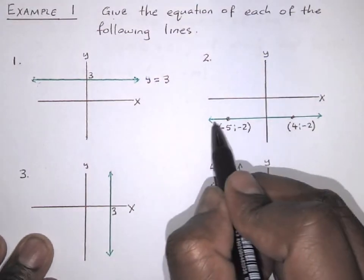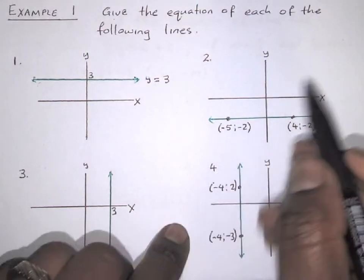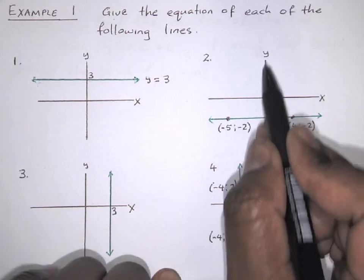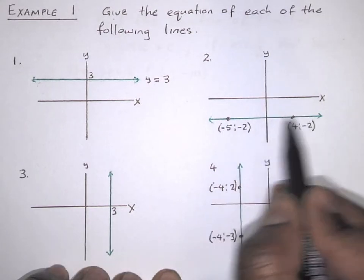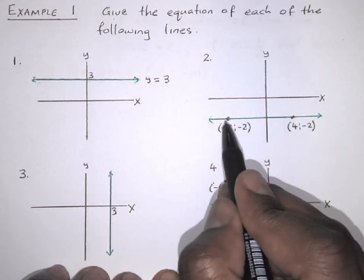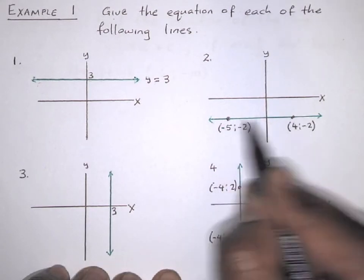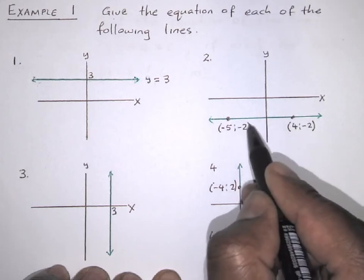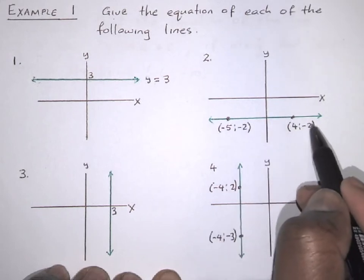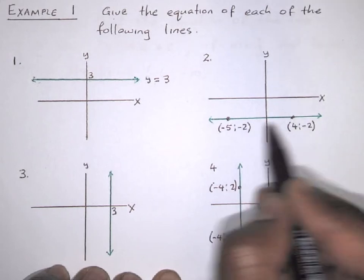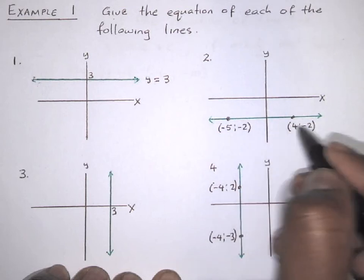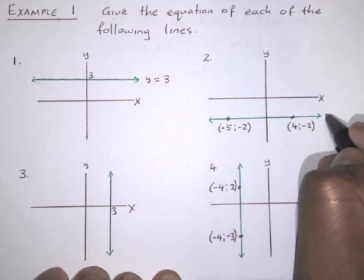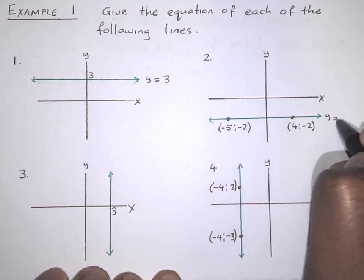Let's look at number 2. This line here only cuts the y-axis. The y-value on this line is minus 2 — you can see the y-value is minus 2. So the equation is y is equal to minus 2. Just concentrate on the y-value.